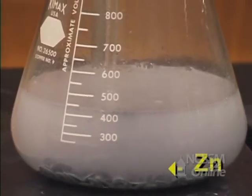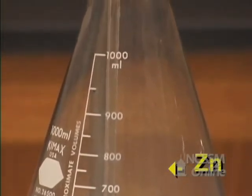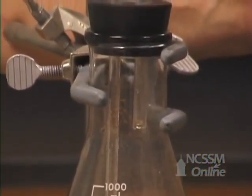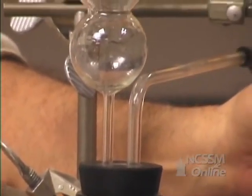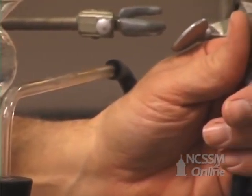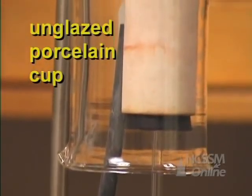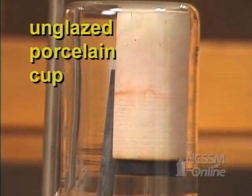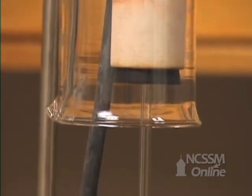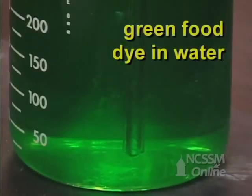The hydrogen diffuses through the walls of the porous cup faster than the air can diffuse out because the hydrogen gas has a lower molar mass than the nitrogen and oxygen in the air. The pressure inside the porous cup increases. This forces the air down the tube and we can see it bubbling out in the green water.